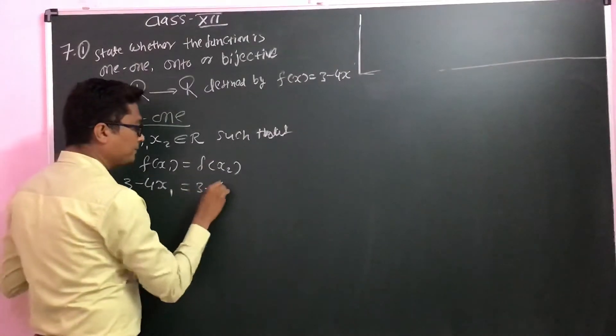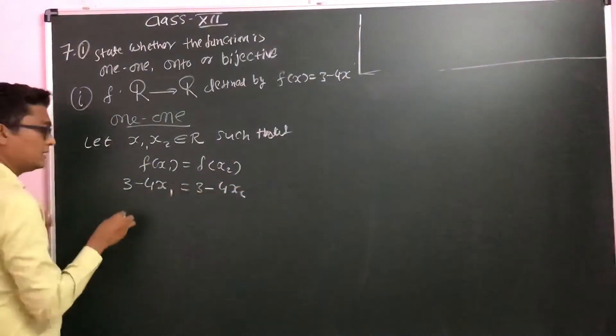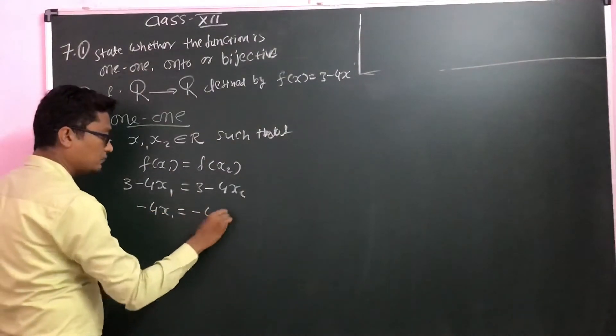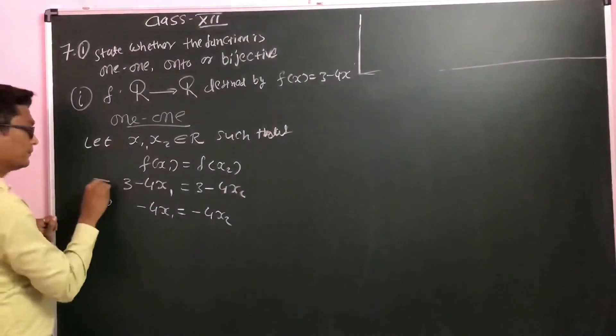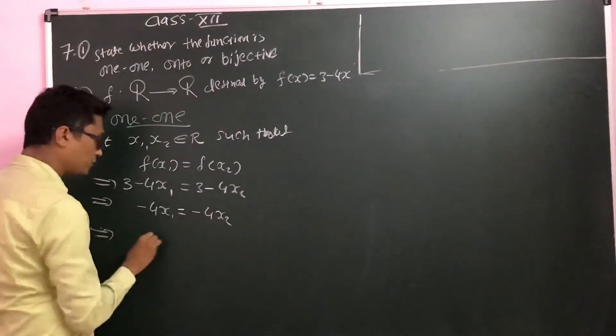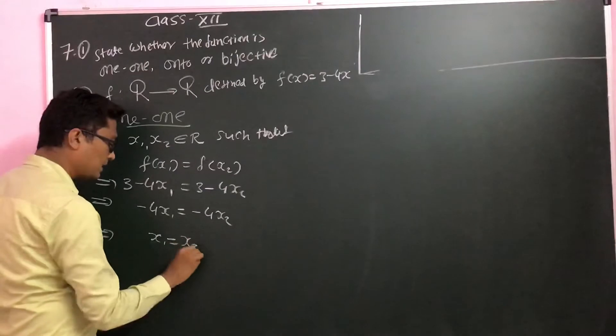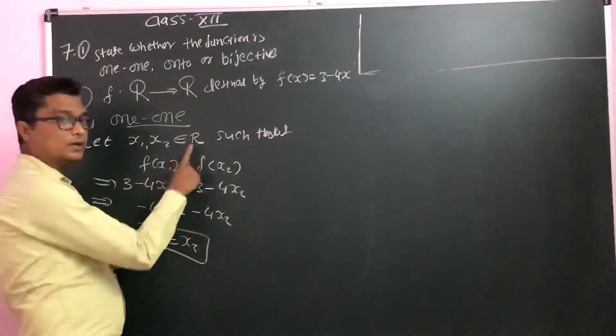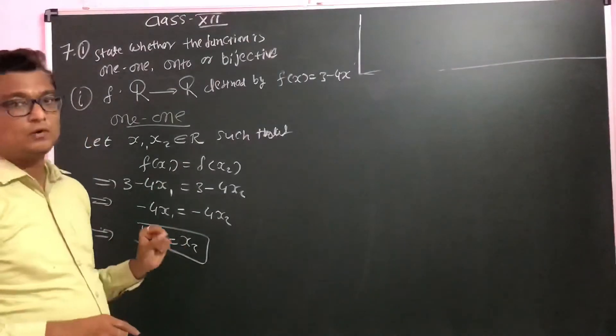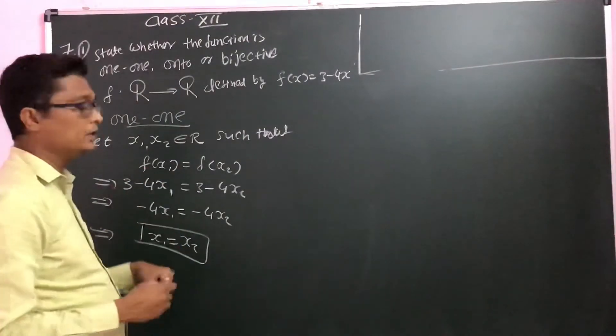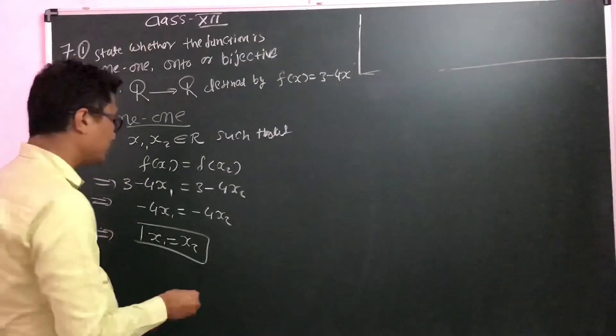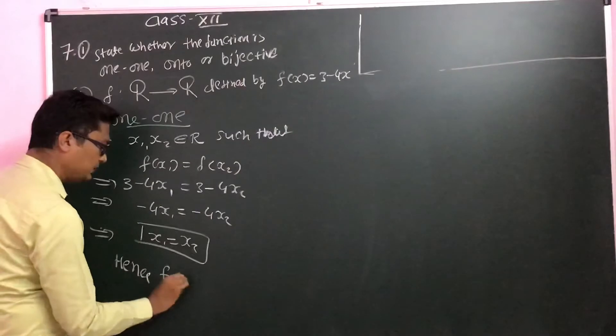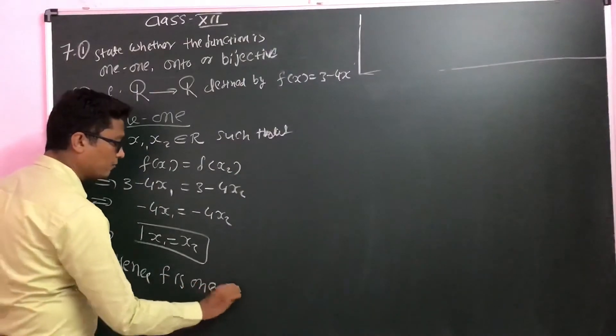This will be 3 minus 4x2. The 3s cancel, so minus 4x1 equals minus 4x2. It implies that the 4s cancel, so x1 equals x2. As you can see, we have a unique value of x1 and x2 for a particular value of f(x). Hence, f is one-one.